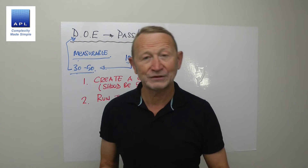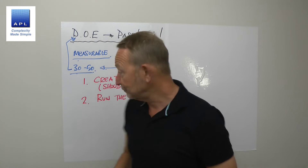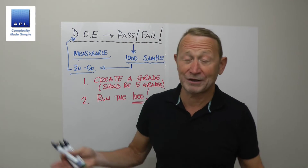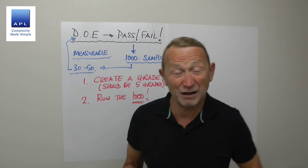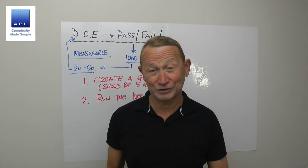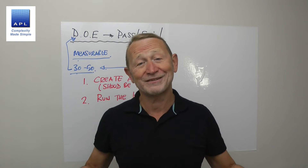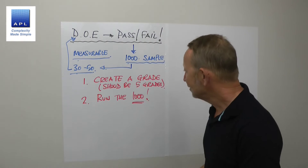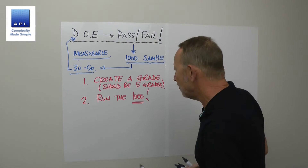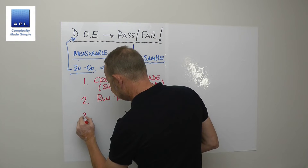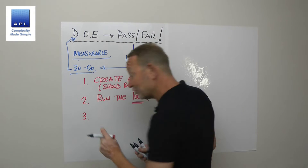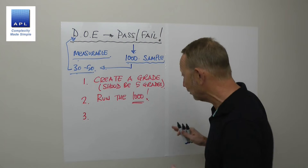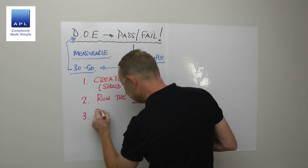Work out the defect rate for each treatment, and then do the DOE on the defect rate and go from there. So there's option number two: pass-fail, and I've got to get a thousand — I'll produce a thousand because I can. Option number three — this is an interesting one, I've seen this work really well — is this: pick a winner.